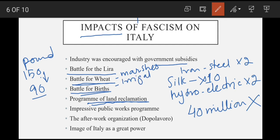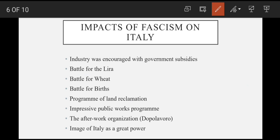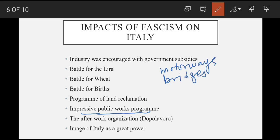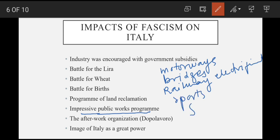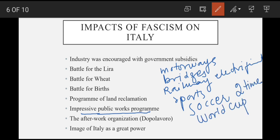Unemployment ko kam karne ke liye ek impressive public works program start kiya jis mein motorways, bridges, flats, railway stations, sports stadiums, schools, aur naye townships banana shamil tha. Railway lines ko electrify kiya. Aur sports mein Italy itna excel kar gaya ke do baar Soccer World Cup bhi jeet gaya — ek 1934 mein aur doosra 1938 mein.